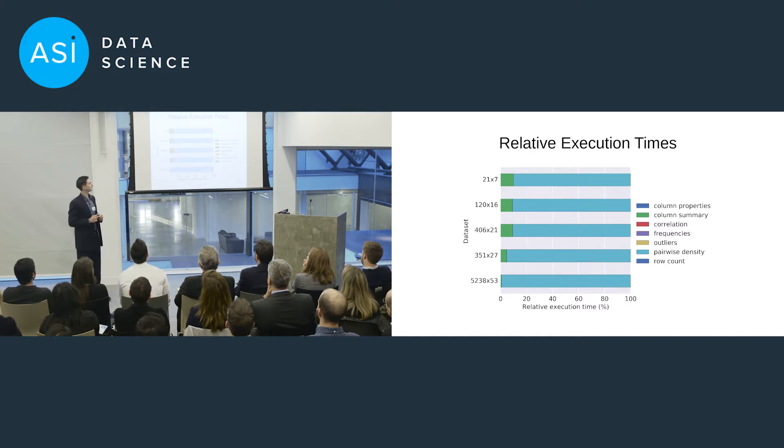So the first is column summary, but by far, the pairwise density outweighs. So if we want to make lens run fast, we need to improve this pairwise density function.